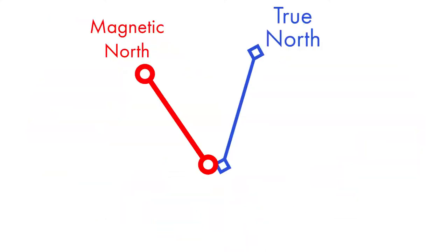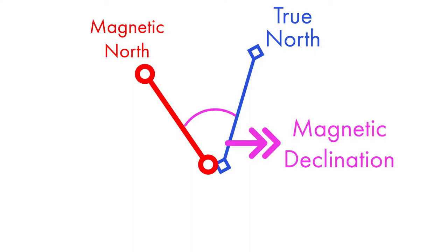The angle between true north and magnetic north is known as magnetic declination. It is important to understand that magnetic north can change over time, which means that magnetic declination can also change over time.